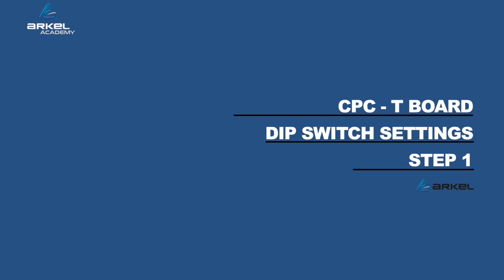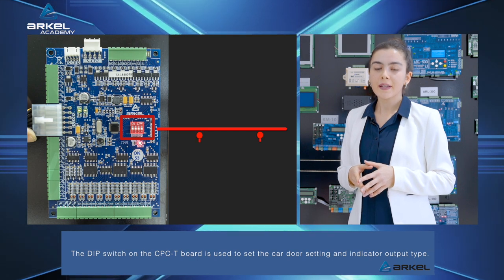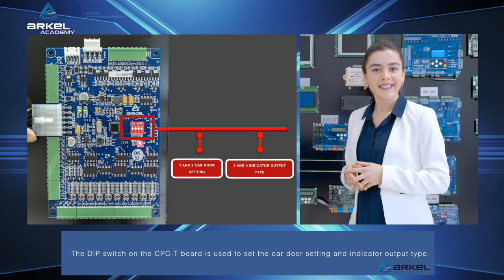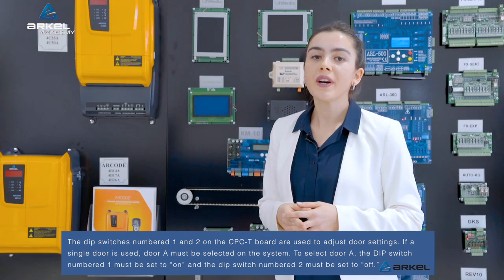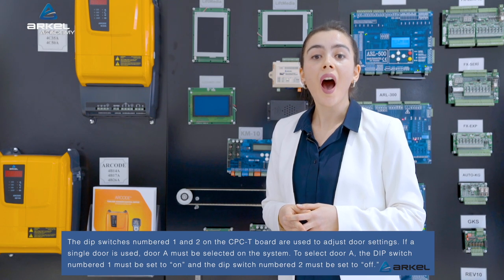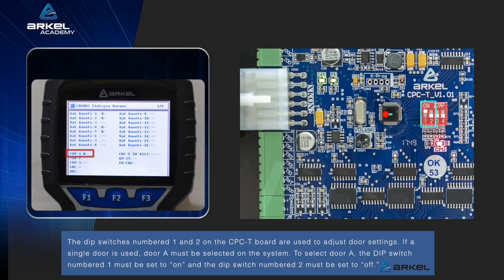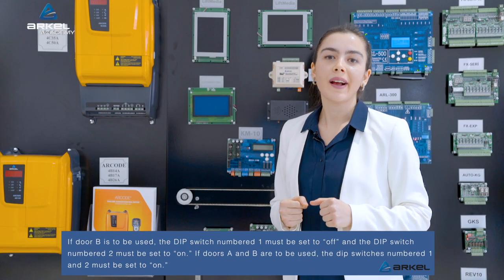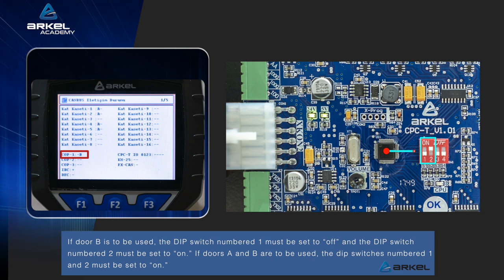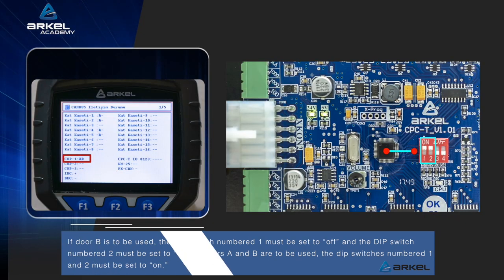CPC-T board dip switch settings. The dip switch on the CPC-T board is used to set the car door settings and indicator output type. Dip switches 1 and 2 on the CPC-T board are used to adjust door settings. To select door A, dip switch 1 must be set to on and dip switch 2 must be set to off. If door B is to be used, dip switch 1 must be set to off and dip switch 2 must be set to on. If doors A and B are to be used, dip switches 1 and 2 must both be set to on.